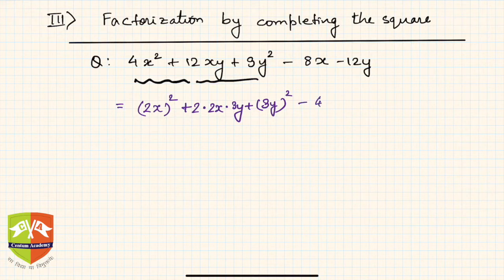So (2x)² + (3y)² like that. And then -8x can be written as 4 times 2x. Now why did I write it like that? Because you see there is a 2x here, so I am trying to get as close to these factors. Now if you see, -12y can be written as -4 × 3y.